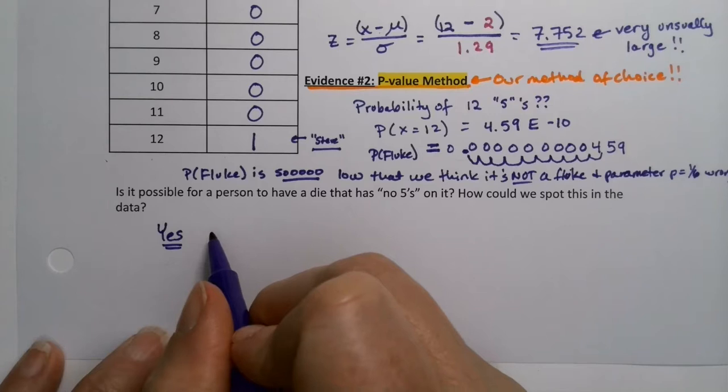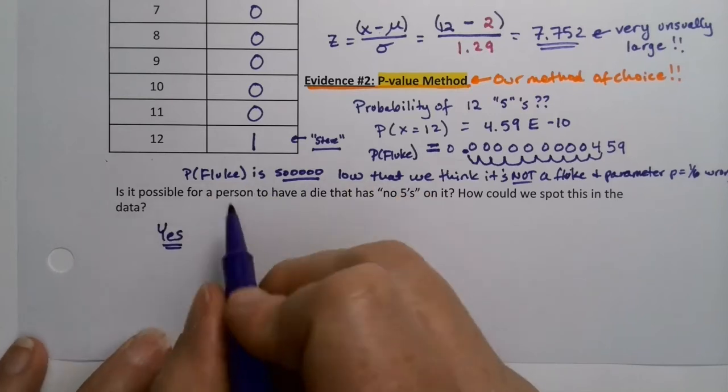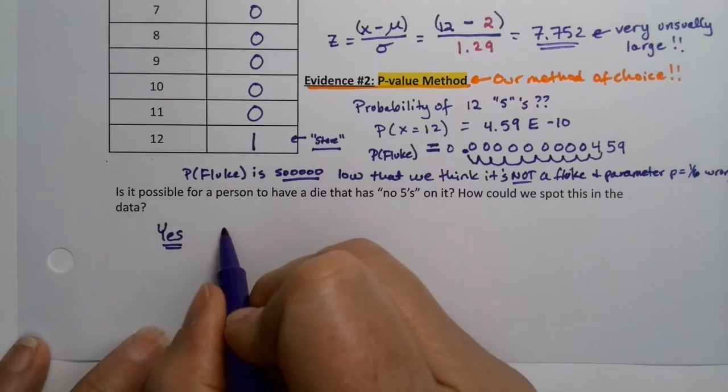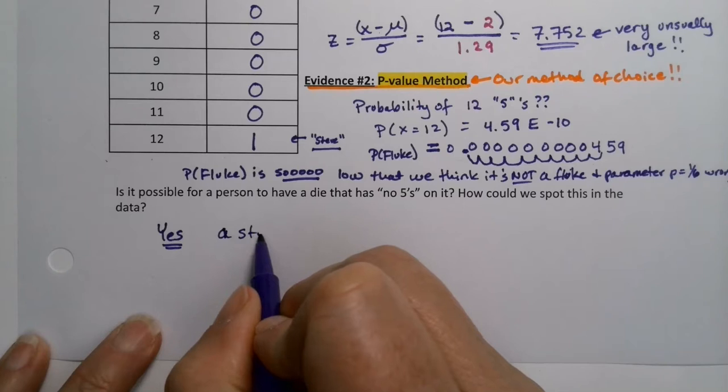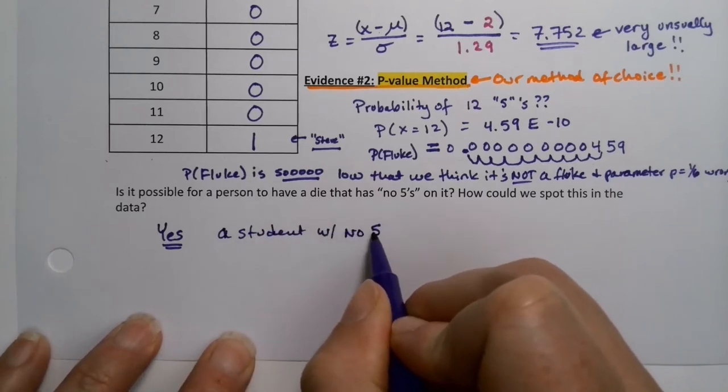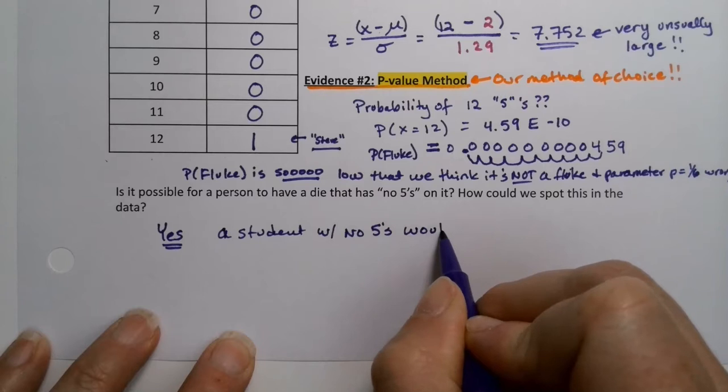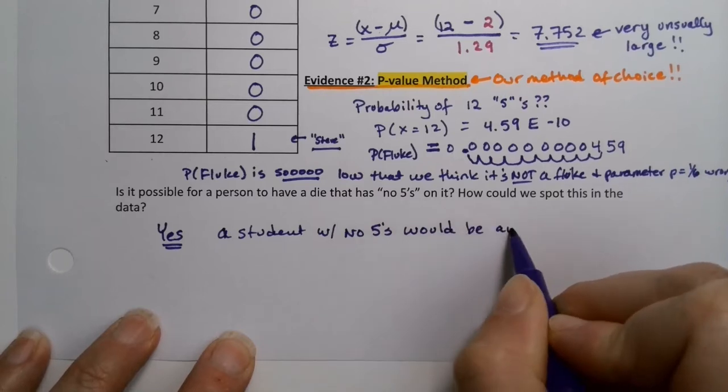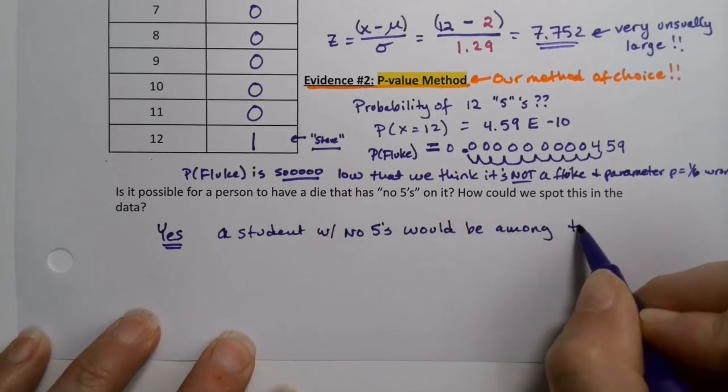So yes that student is among the zeros. A student with no fives would be among the zero results.